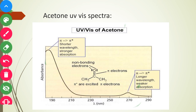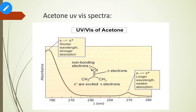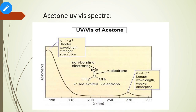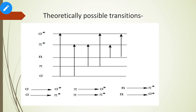Looking at the acetone spectrum again: the lambda max for the pi to pi* transition is 195 nm, which is a high-intensity allowed transition. For the n to pi* transition, lambda max is 274 nm — this is within the UV-visible range but appears as a small peak with less intensity because it is a forbidden transition.